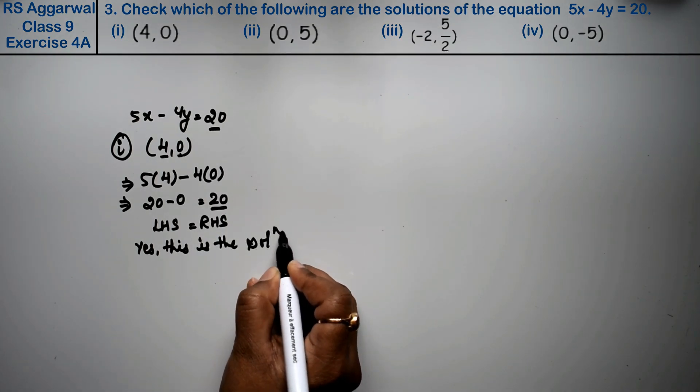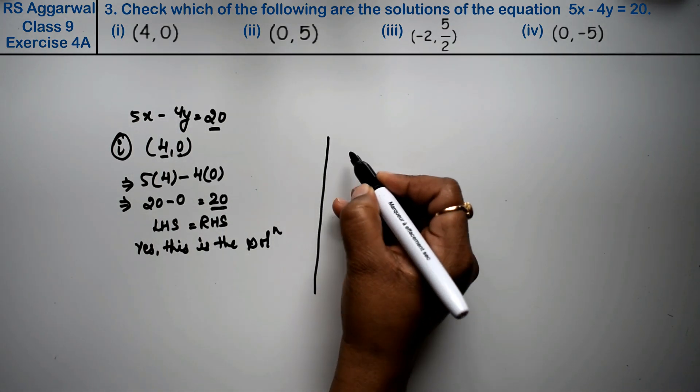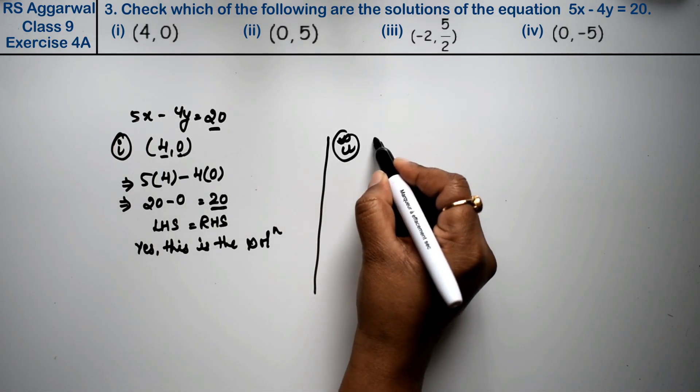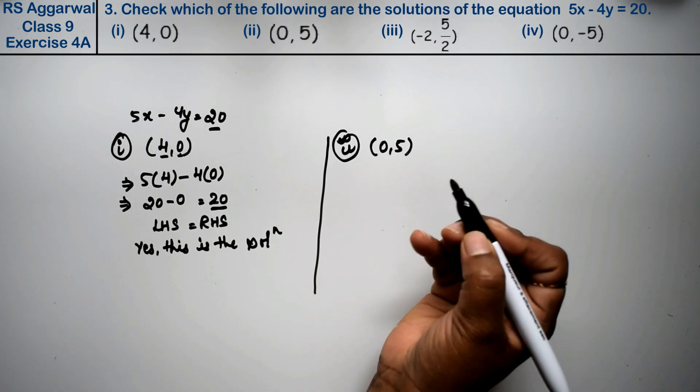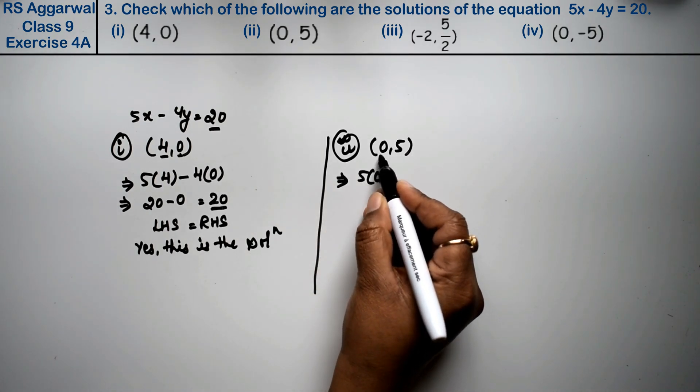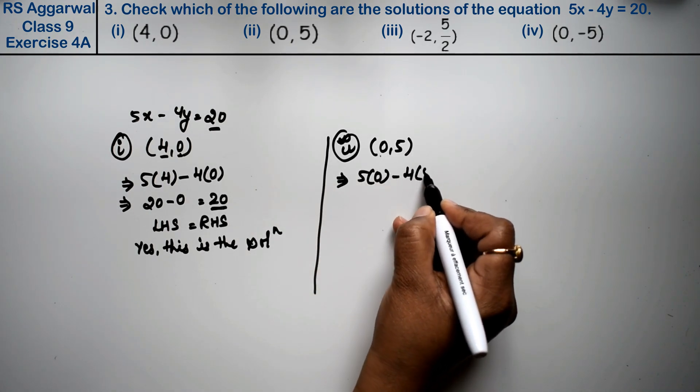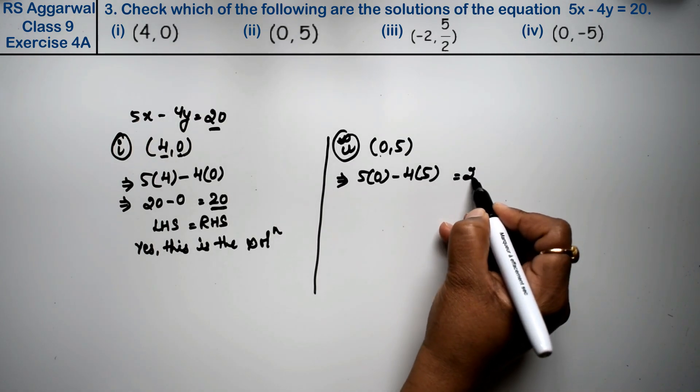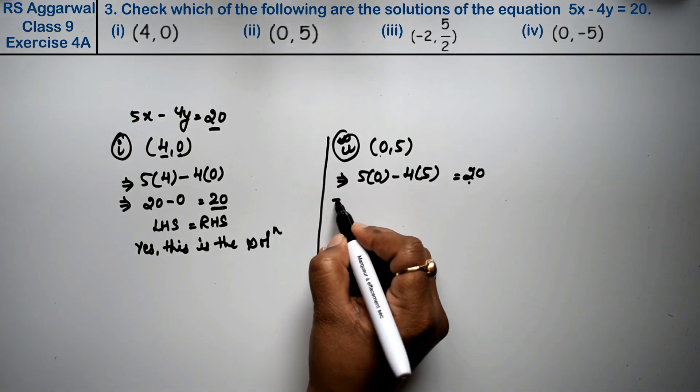Let's do second part. Second part is 0 and 5. So let's see. 5 into 0, the first one is x, so minus 4 into 5 equals to 20. So let's see, 0 minus 20.